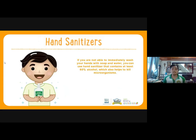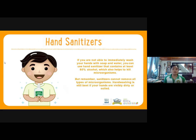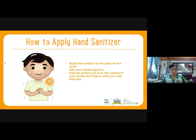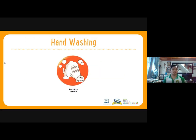If you are not able to immediately wash your hands with soap and water, you can use hand sanitizer that contains at least 60% alcohol, which also helps to kill microorganisms. By looking at the product label, you will see how much alcohol the product contains. But remember, sanitizer cannot remove all types of microorganisms and it's not as effective as soap and water, especially if your hands are visibly dirty or soiled. When using hand sanitizer, apply the product to the palm of one hand, rub your hands together, and rub the product all over the surface of your hands and fingers until your skin feels dry — this should take about 20 seconds. Remember, handwashing is one of the best measures to protect yourself and others from getting sick, because it prevents the spread of microorganisms and reduces the risk of getting communicable infections. Be responsible for your health by regularly practicing good hygiene.